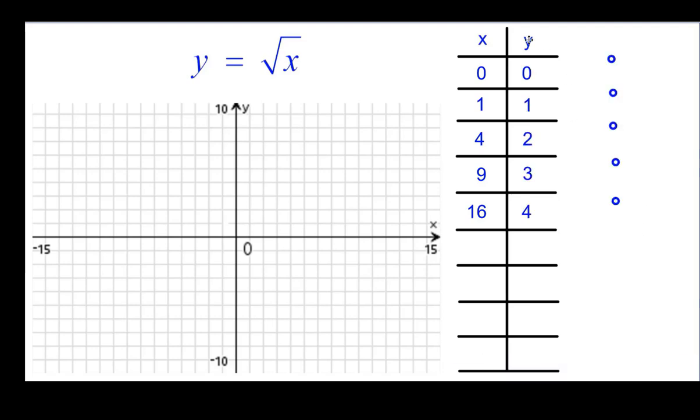So here are the values that you should have gotten. And we're going to go ahead and plot those points one at a time, starting with the origin. And then over 1 and up the square root of 1. Over 4 and up the square root of 4. Over 9 and up the square root of 9. And over 16, up the square root of 16.